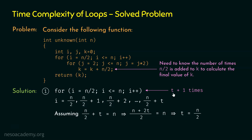Replacing t by n/2, this outer for loop executes n/2 + 1 times. So the frequency count of the outer for loop is n/2 + 1. Now we need to determine the frequency count of the inner for loop.